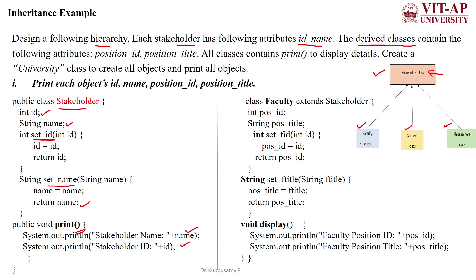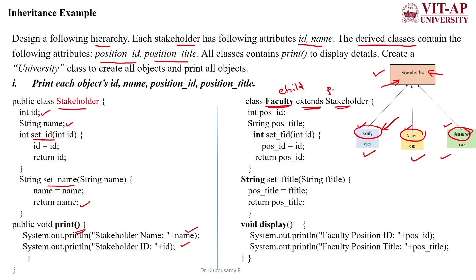Based on the hierarchy, the derived classes are Faculty, Student, and Researchers. Each should have two variables: position_id and position_title. First, we create the Faculty class — it extends Stakeholder, making Faculty the child class and Stakeholder the parent class. Two variables, position_id (integer) and position_title (String), are declared.